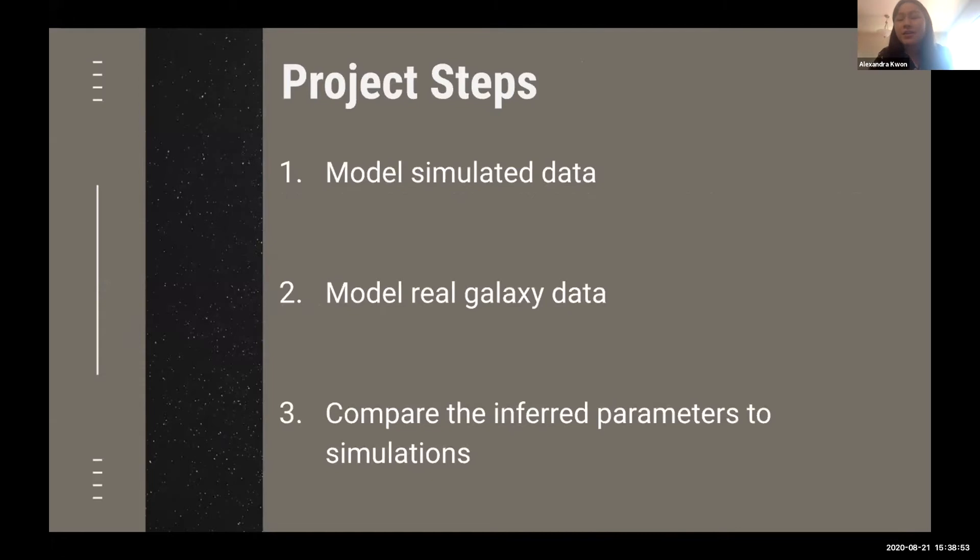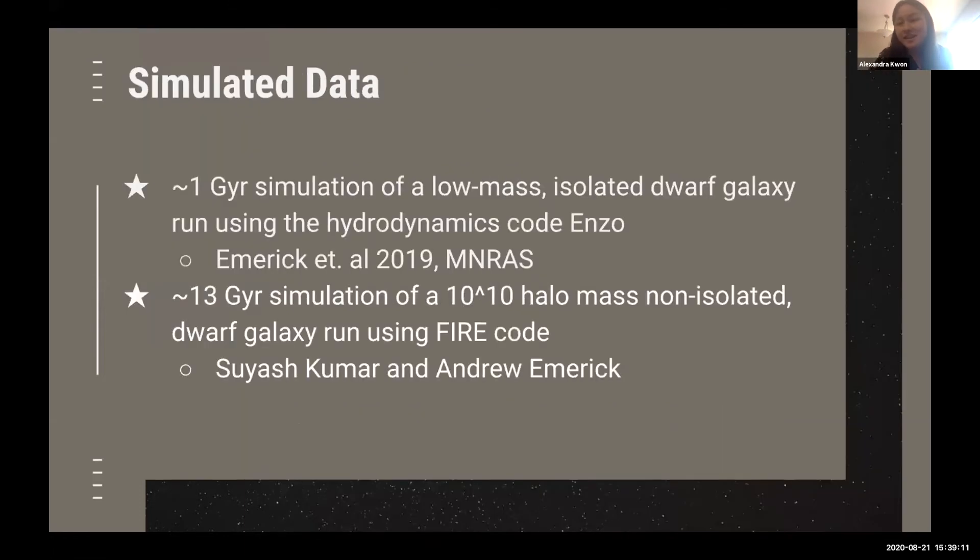Our project will occur in three main steps. We will begin by modeling simulated data because we know a lot more about simulated galaxies, and then we can have true values to compare our inferred parameters to so we can see how accurate our model is before we apply it to real galaxies. The simulated data we will be using is actually from other scientists here at Carnegie, Andrew Emmerich and another summer student, Suyash Kumar. We use two different simulations: one is one gigayear long and the other is 13 gigayears long, both of low mass dwarf galaxies.